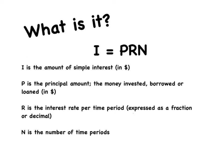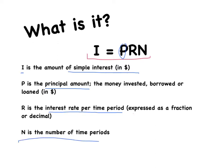So how do we work out simple interest? We have a straightforward formula: I equals PRN. In that formula, I is the amount of simple interest you either have to pay back or that you receive. P is the principal amount — either the money you invest or the money you borrow. We multiply that by R, the interest rate per time period, usually expressed as a fraction or a decimal. N, the final component, is the number of time periods.